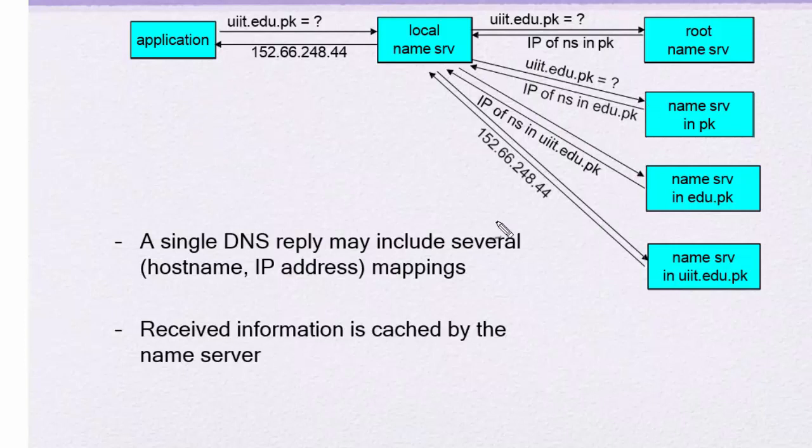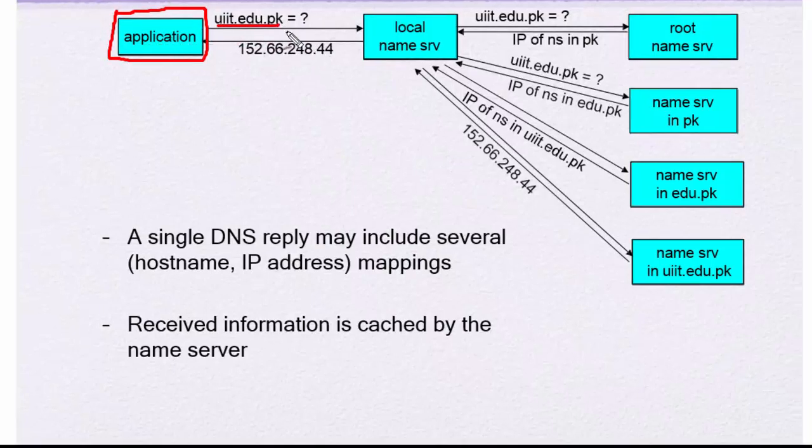Here you are seeing the diagram. This process is called a recursive process. This is an application here. You are using a system and typing uiit.edu.pk, and it first generates a request towards the local name server.